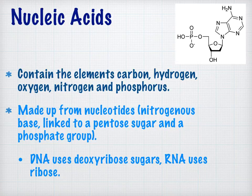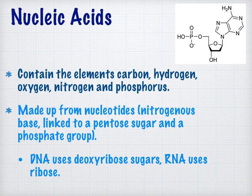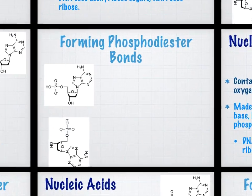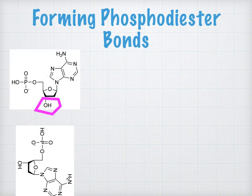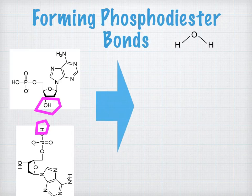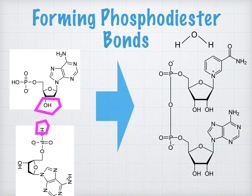Nucleic acids are another example of a polymer, composed of the elements carbon, hydrogen, oxygen, nitrogen and phosphorus. To make a nucleic acid you attach together a string of nucleotides with phosphodiester bonds. A nucleotide is a nitrogenous base linked to a pentose sugar and a phosphate group — in RNA the pentose sugar is ribose, in DNA it's deoxyribose. To form phosphodiester bonds, the OH group on the sugar and the OH group on the phosphate react in a condensation reaction, forming a linkage through the oxygen atom.